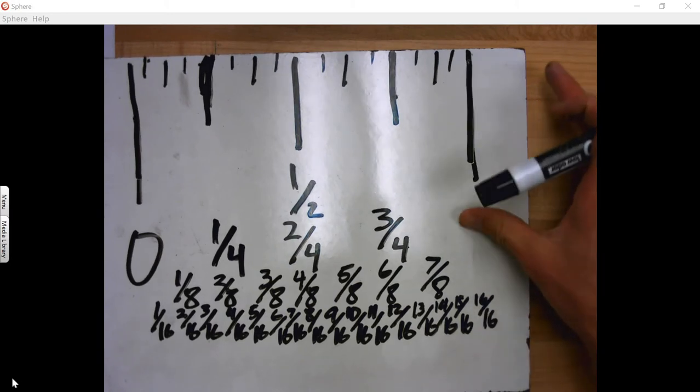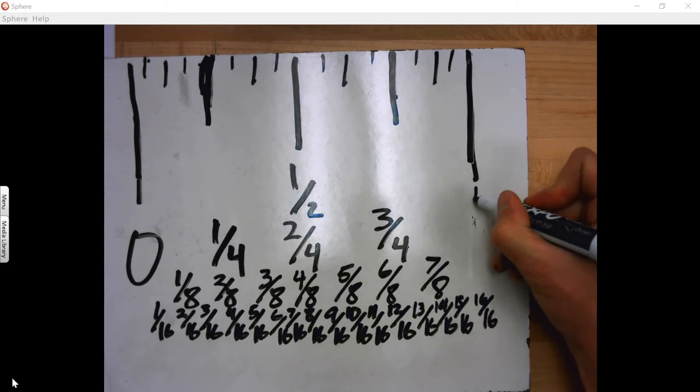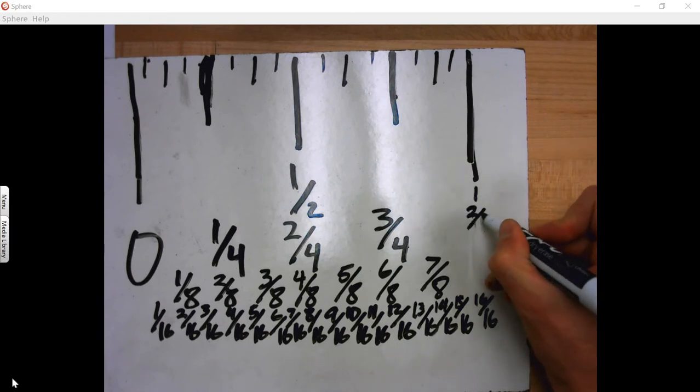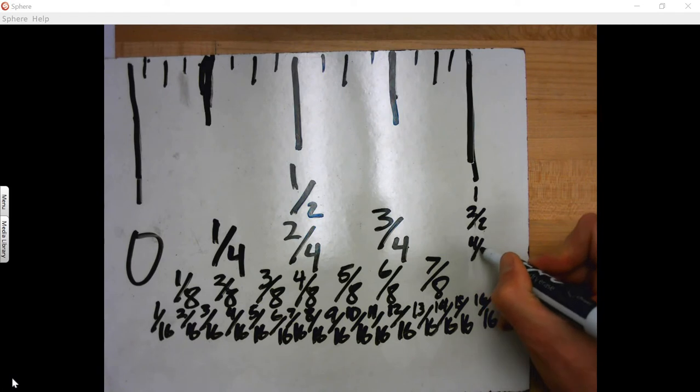And sixteen-sixteenths is not only equivalent to one, but it's equivalent to two halves, four-fourths, and then eight-eighths, right?